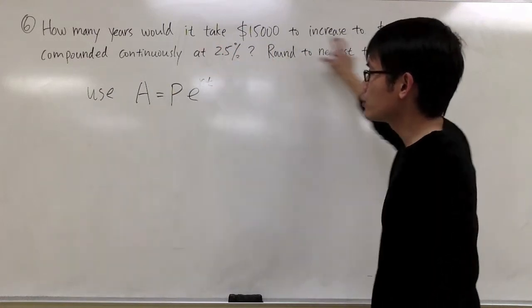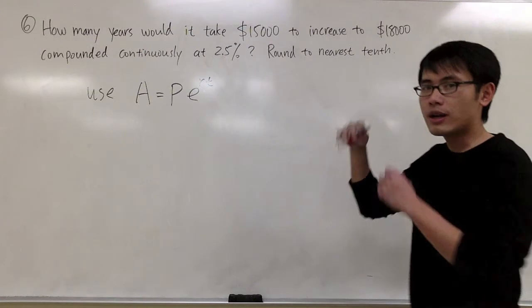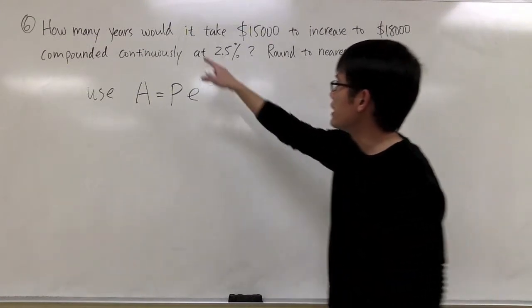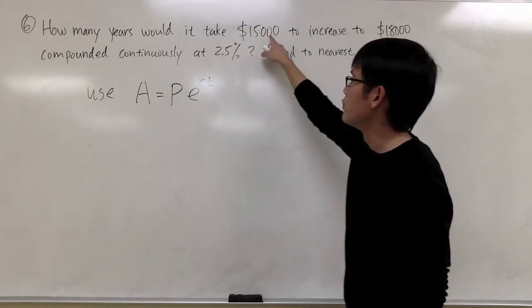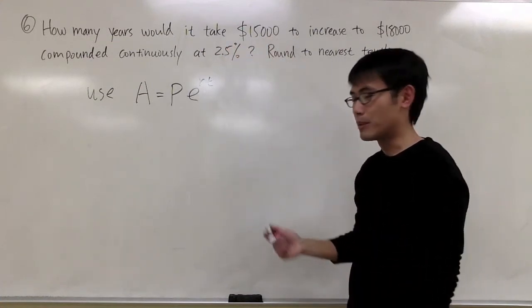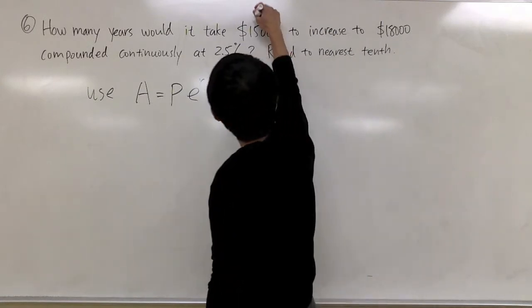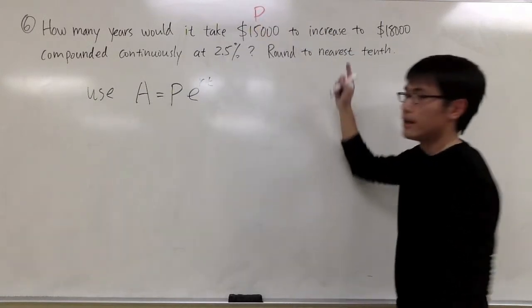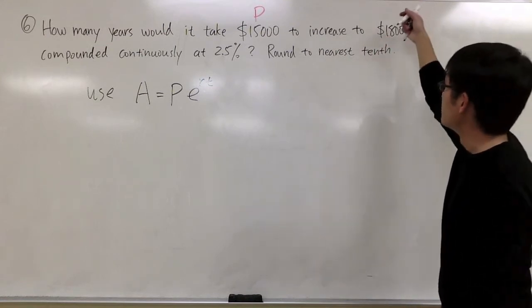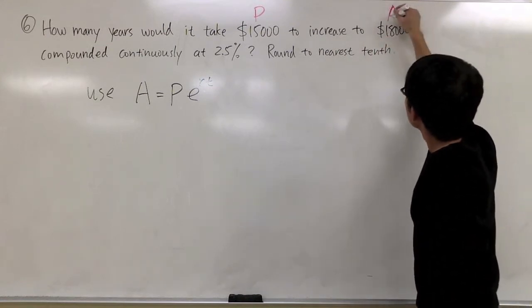Now we're going to go through the question one more time and put down all the numbers into letters. So he said, how many years will it take for $15,000, and that's my original amount, so that will be my principal. I'll label this as P. And I want this to be increased to $18,000. That's the amount I want to get. That will be my A.